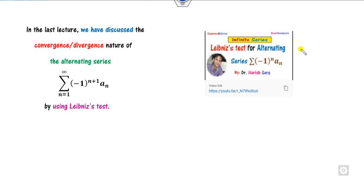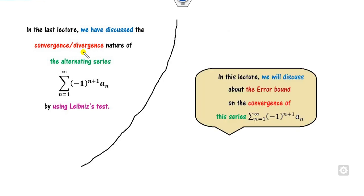What we have discussed so far? In the last lecture we discussed what is the Leibniz test for the alternating series, (-1) raised to power a_n. We discussed the nature of its convergence and divergence.